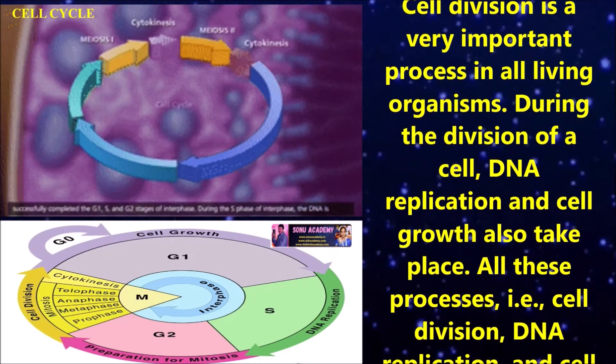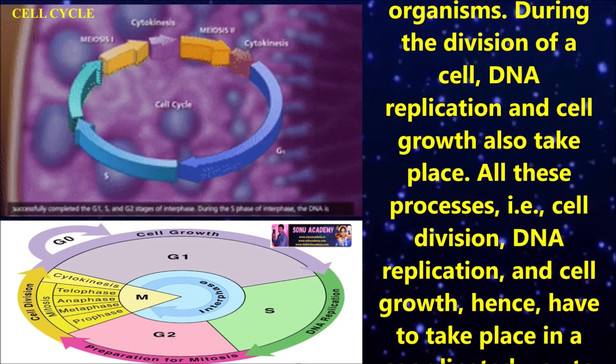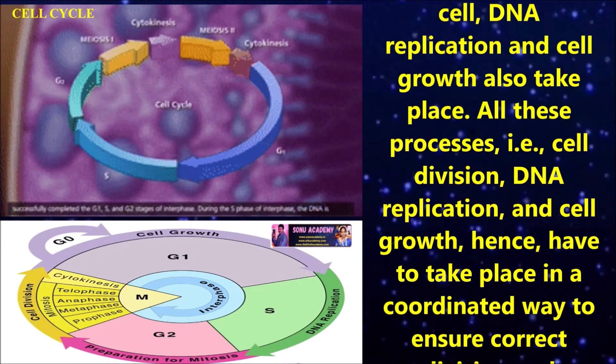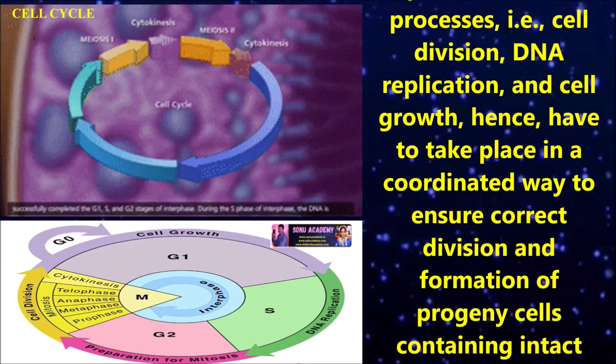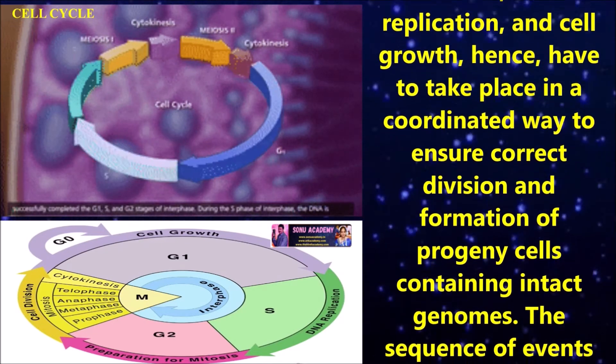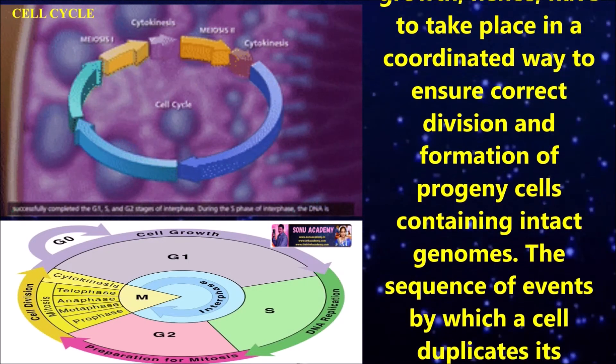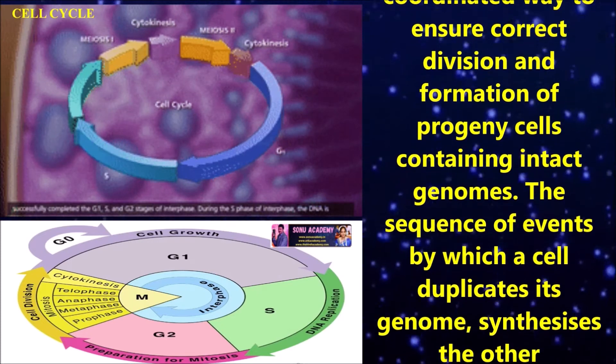All these processes, that is cell division, DNA replication, and cell growth, hence have to take place in a coordinated way to ensure correct division and formation of progeny cells containing intact genomes.